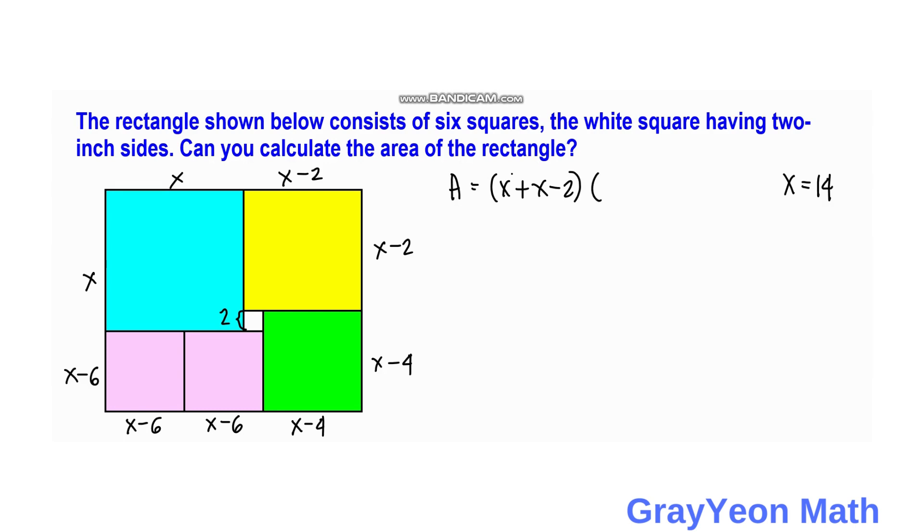Then we have area is equal to 14 plus 14, this is 14 plus 14 minus two, times 14 plus 14 minus six. And this will be 28 minus 2 would be 26.